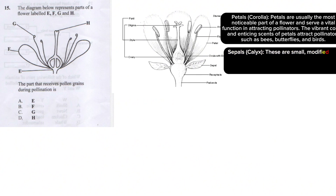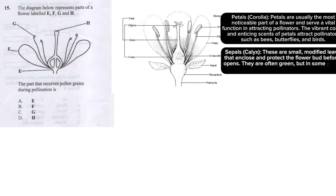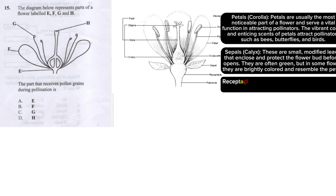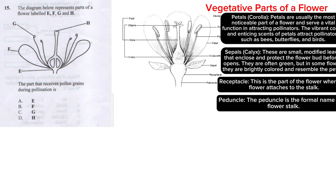Sepals, also called calyx, are small modified leaves that enclose and protect the flower bud before it opens. They are often green but in some flowers are brightly colored and resemble petals. The receptacle is the part of the flower where it attaches to the stalk. The peduncle is the formal name for the flower stalk. These form the vegetative parts of a flower.